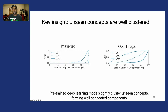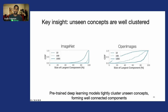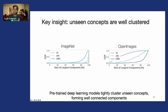In these two plots, we calculated the largest connected component based on the K-nearest neighbor graph for different values of K and plotted the CDF. We can see that for both ImageNet and OpenImages, the majority of classes form very large connected components with over 80% of the data for a sufficiently large value of K.